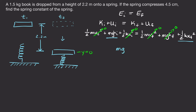Our expression simplifies a great deal: initial gravitational potential energy equals the final elastic potential energy of the spring. Solving for the spring constant, we multiply by two and divide by our final displacement squared, giving k equals two times mgh initial divided by x final squared.